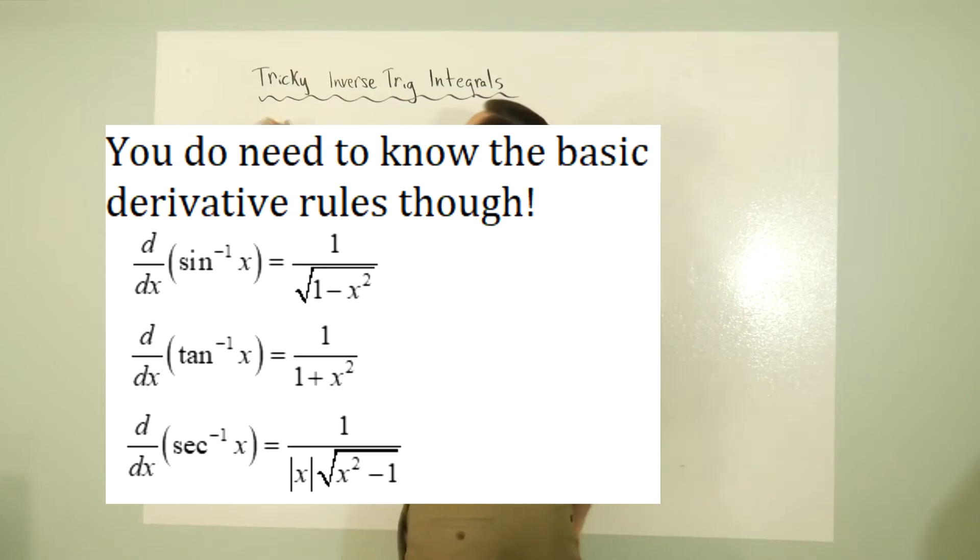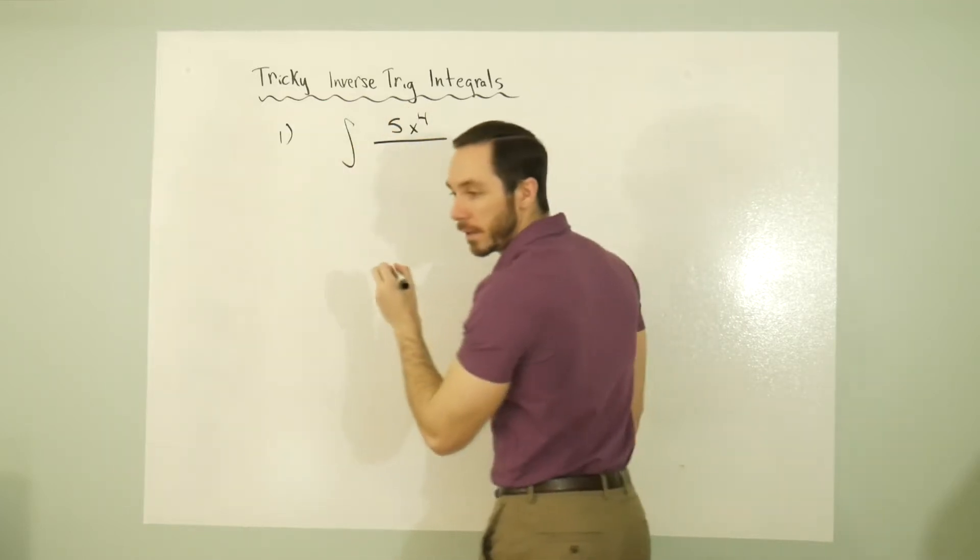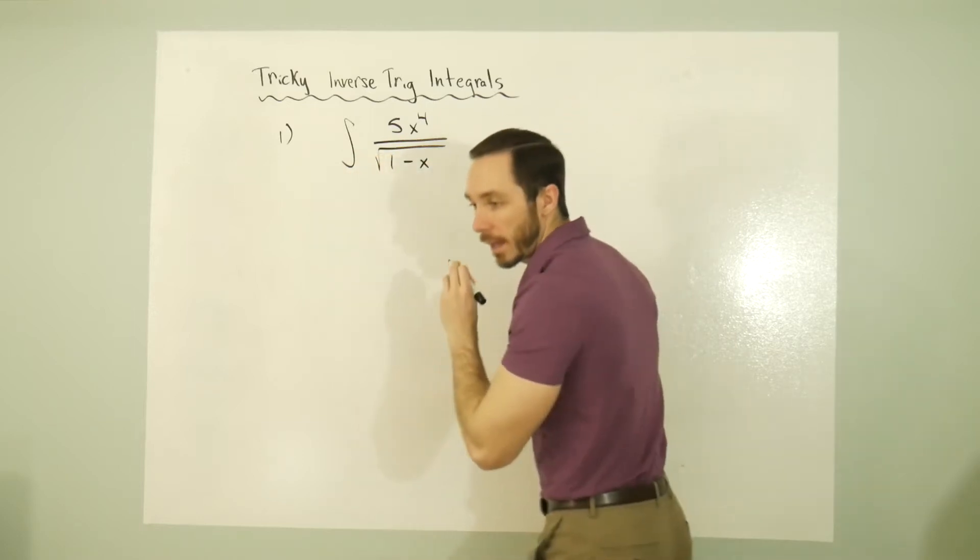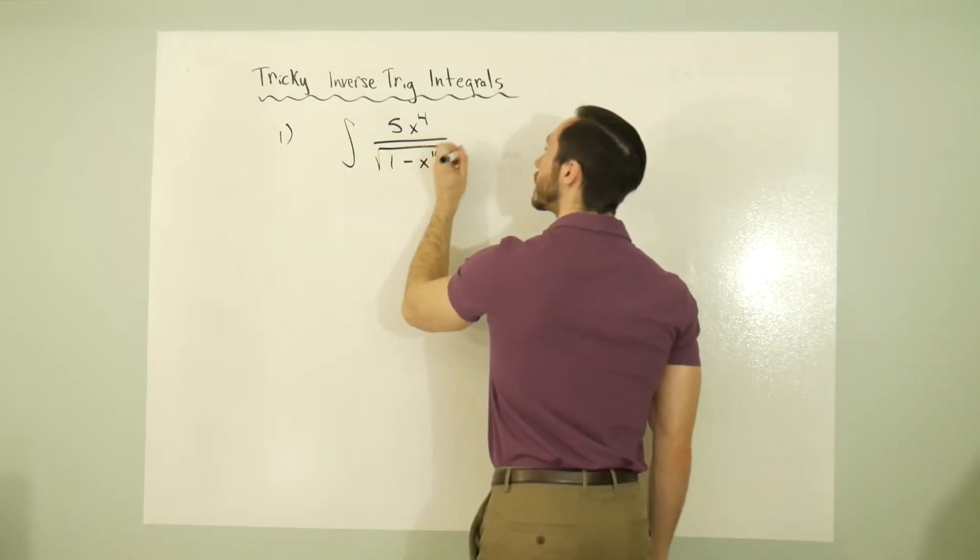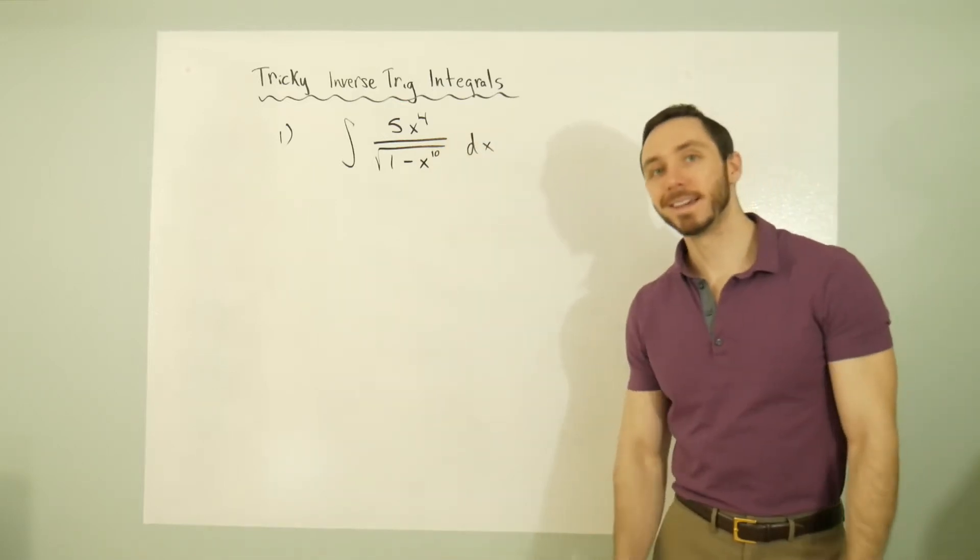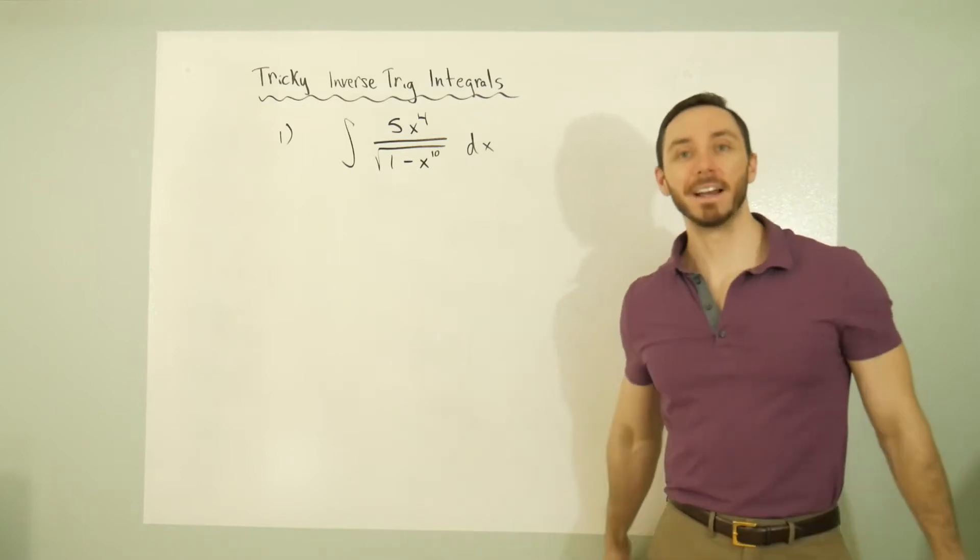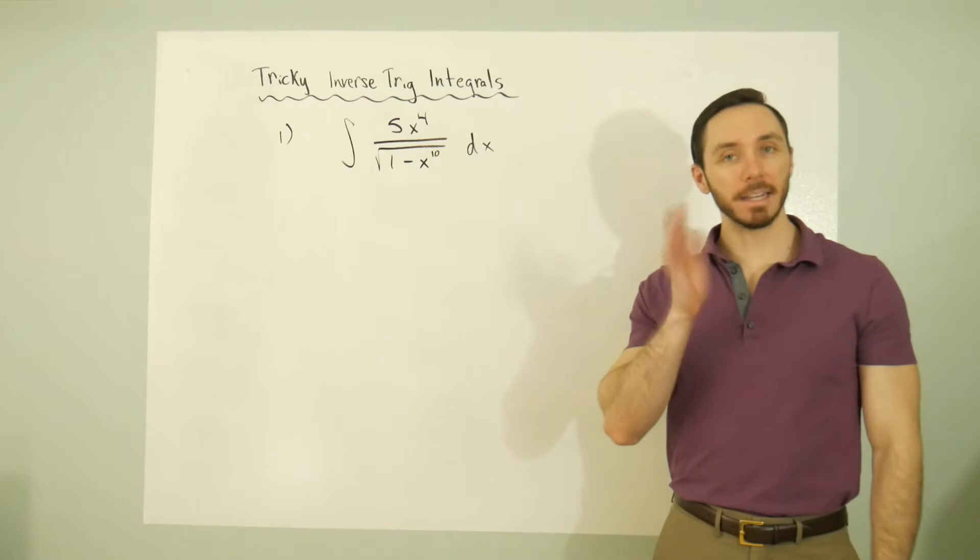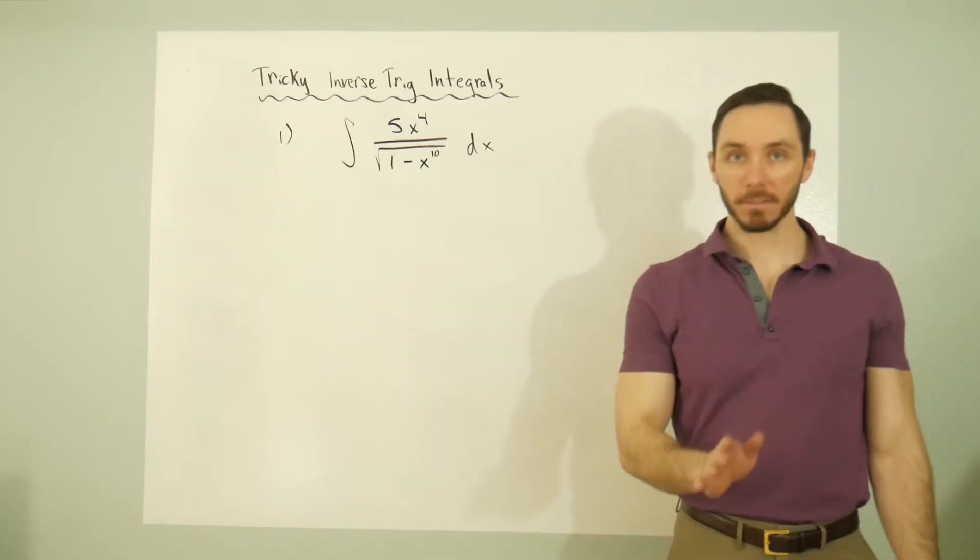Let's do the first one. Number one, we're dealing with the integral of 5x^4 over the square root of 1 minus x^10 dx. Right off the bat, it's tempting to say that looks nothing like an arcsine, arc cosine, arc tangent, whatever it may be.